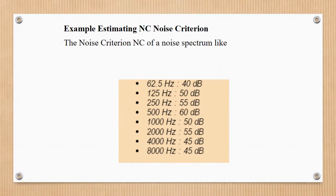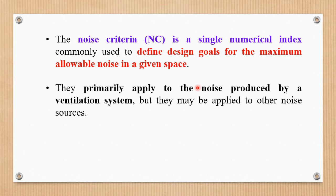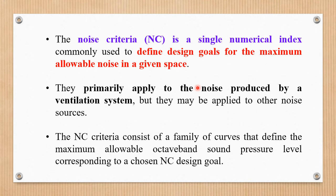Here is one more example of the estimation of the noise criteria curve, showing the noise criteria of a noise spectrum with frequencies and noise pressure level values. The noise criteria is a single numerical index commonly used to define a design goal for the maximum allowable noise in a given space. They primarily apply to noise produced by a ventilation system but may be applied to other noise sources as well. The noise criteria consists of a family of curves that defines the maximum allowable octave band sound pressure level corresponding to a chosen noise criteria design goal.